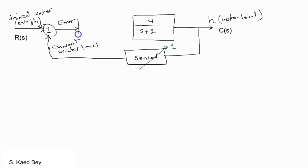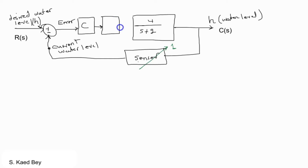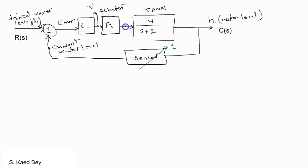The error is fed into a controller or compensator, which is then fed perhaps to an actuator responsible for adjusting the flow rate to the plant. The plant here is our tank. This is perhaps our actuator or solenoid valve. The actuator transfer function may have an input in voltage and an output in some sort of volumetric flow rate.